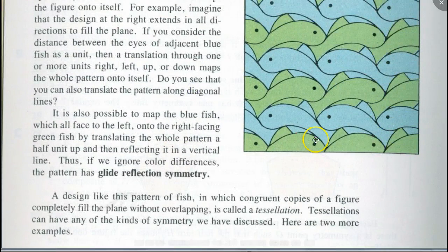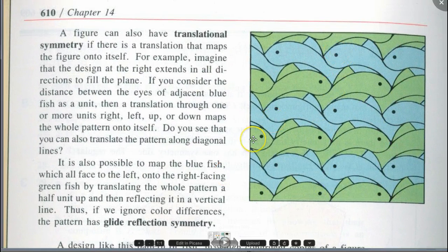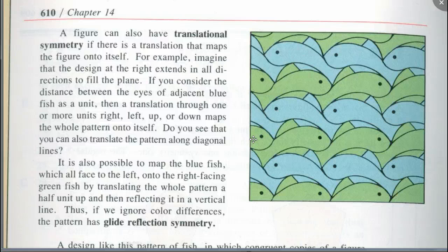It is also possible to map the blue fish, which all face to the left, onto the right-facing green fish, by translating the whole pattern half a unit and reflecting it in a vertical line. So if we didn't consider any color, you could actually do a glide reflection — move this fish down and then reflect it, and as you can see it will map onto itself.